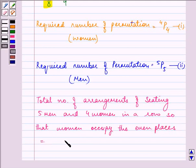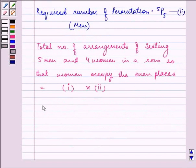This is equal to equation 1 multiplied by equation 2, that is 4P4 multiplied by 5P5.